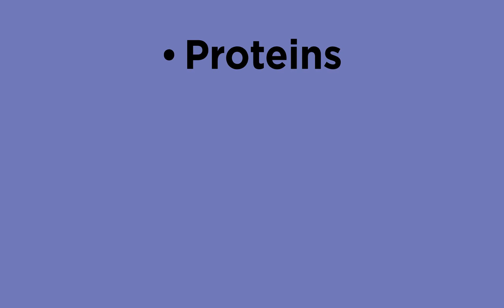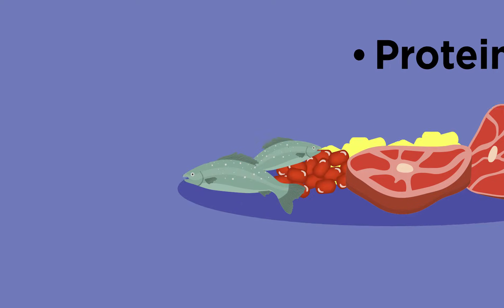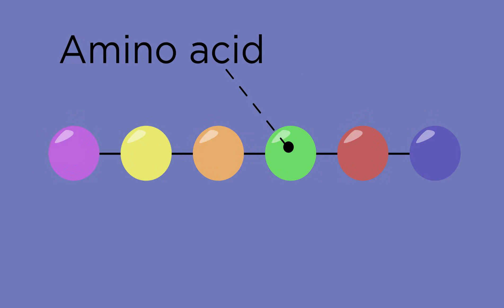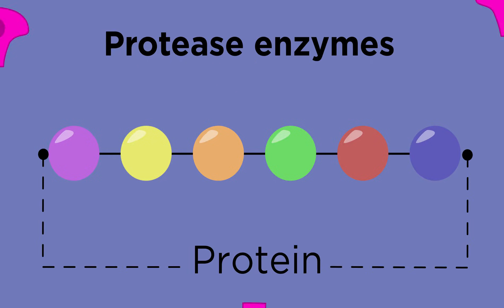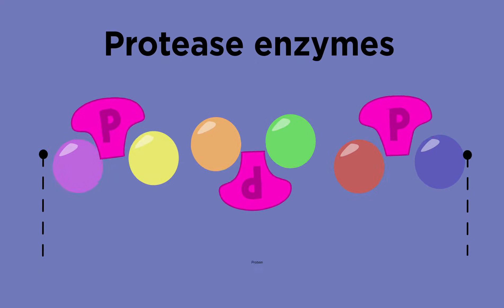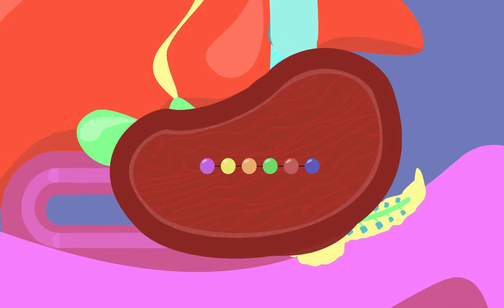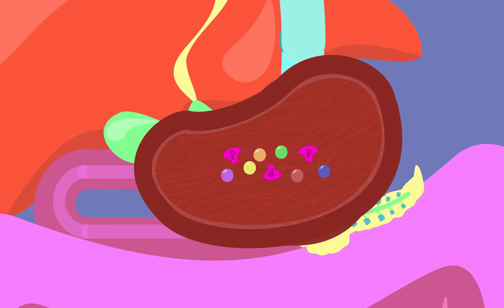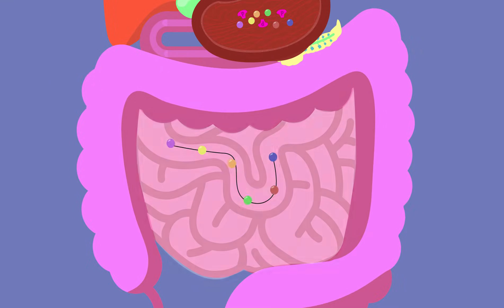Now let's look at proteins. Proteins are found in meat, fish, beans, and pulses. They are made up of amino acids and are digested by protease enzymes. The protease enzymes break down proteins into amino acids. A protease called pepsin breaks down proteins in the stomach, but this doesn't work once the food moves into the small intestine.